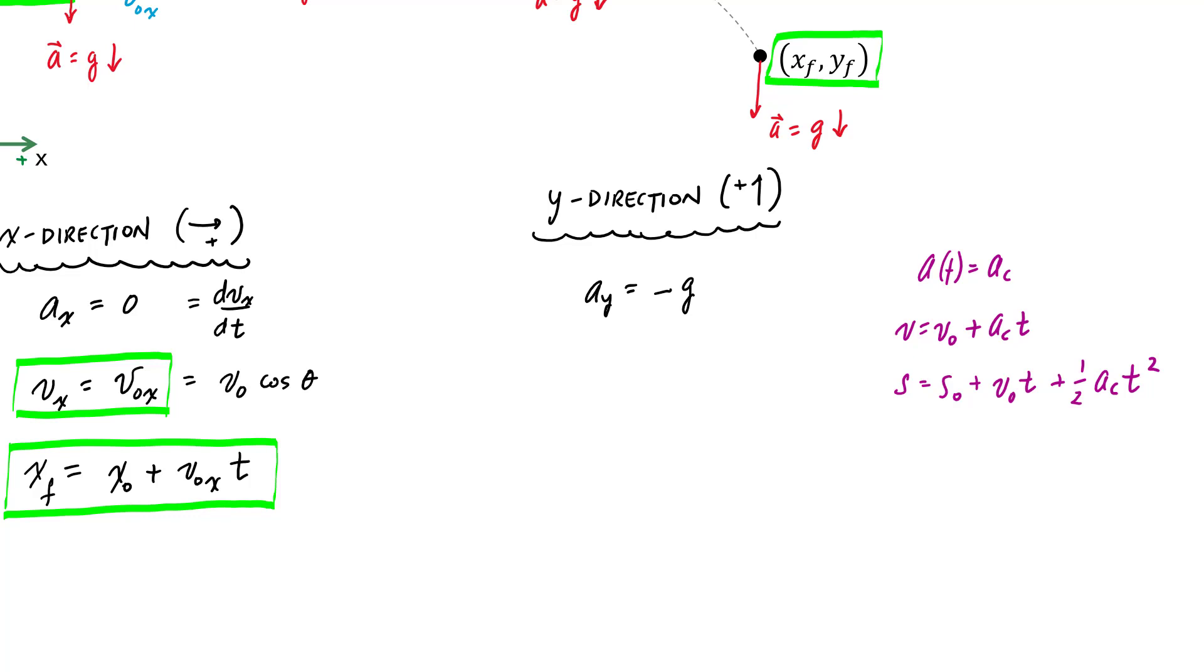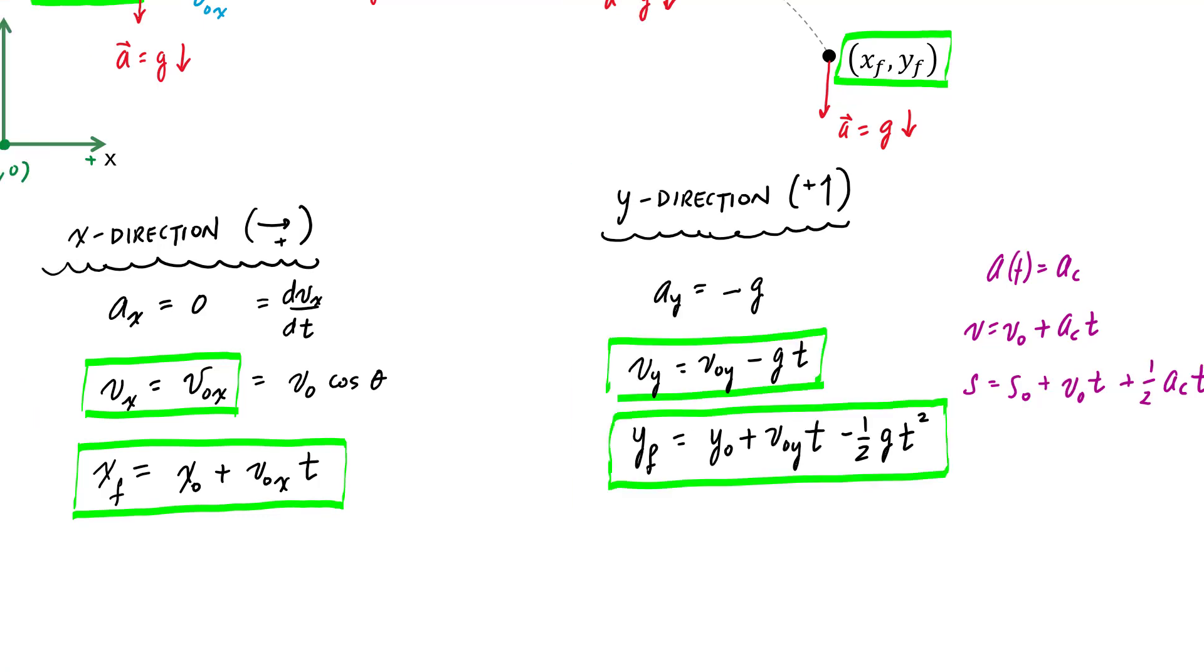If I integrate acceleration to get the velocity, I would get VY equals V naught Y minus G T. And then my Y position would be... you can see the analogy between constant acceleration equations and the Y direction motion. I'll number these number one, number two, number three, and number four.